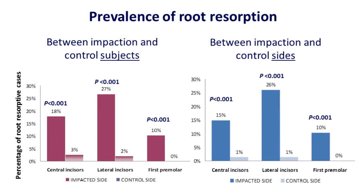Second, the prevalence of root resorption at all three adjacent teeth was significantly higher in the impaction group than in the control group. And in the unilateral impaction patients, the prevalence of root resorption was significantly higher on the impaction side than on the normal side.